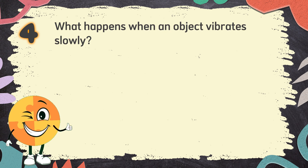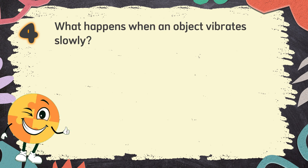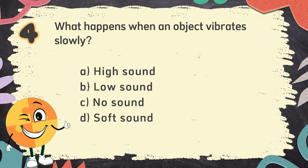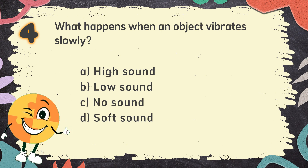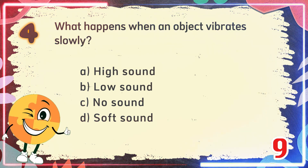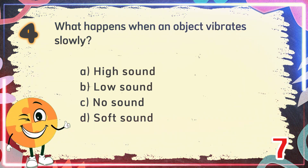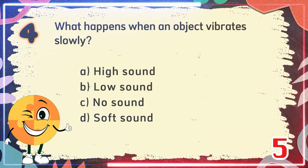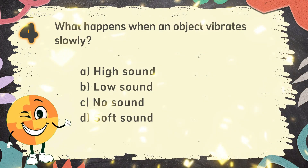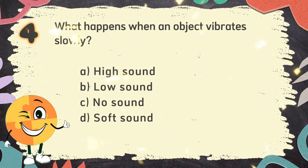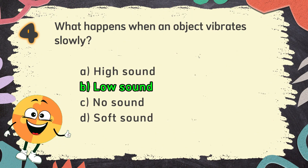Number 4. What happens when an object vibrates slowly? The choices are: A. High sound, B. Low sound, C. No sound, D. Soft sound. The correct answer is B. Low sound.